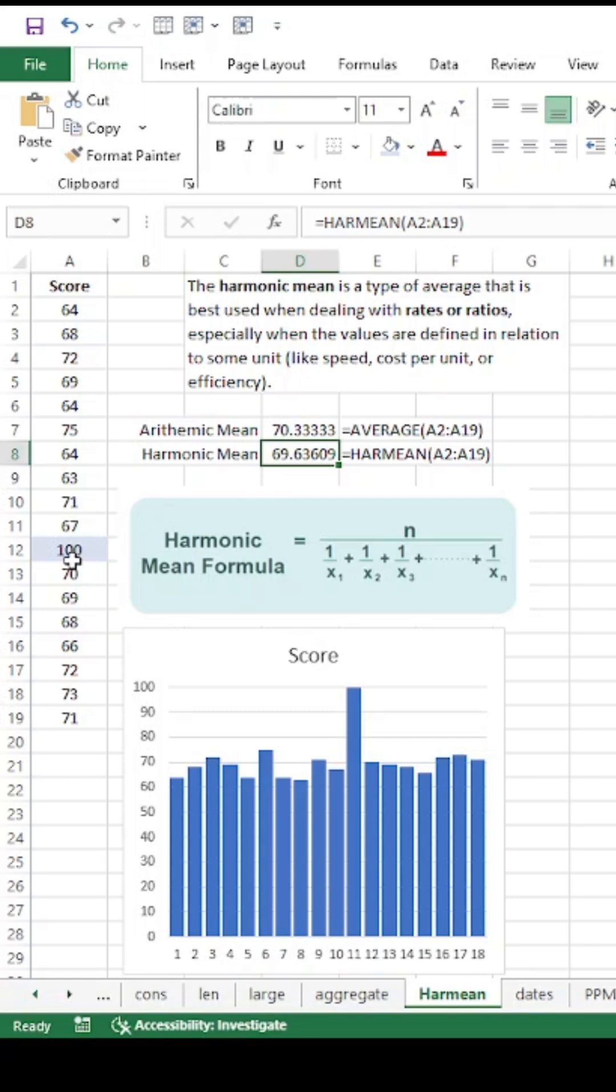And this will give you the average by discounting this very large outlier. You can see most of these values are around 70, somewhere between 65 and 75, right in that range. And you can see the values here on this chart, and you can see this one outlier that goes very high. So the harmonic mean allows the mean to be discounted for that one single outlier.